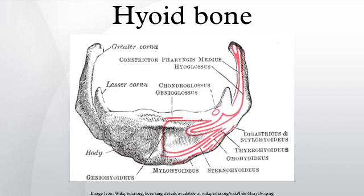The greater and lesser horns are two sections of bone that project from the hyoid. The greater horns project backward from the outer borders of the body. They are flattened from above downward and taper to their end, which is a bony tubercle connecting to the lateral thyrohyoid ligament. The upper surface of the greater horns are rough and close to its lateral border, facilitating muscular attachment. The largest muscles that attach to the upper surface of the greater horns are the hyoglossus and constrictor pharyngeus medius, which extend along the whole length of the cornu.